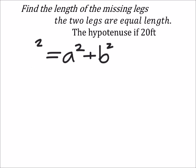Now in this problem, we know that the hypotenuse is 20. And it tells us that the two legs are equal length, but it didn't tell us the length of either. So instead of using a and b, I'm going to use x, but it's the same value for both legs.